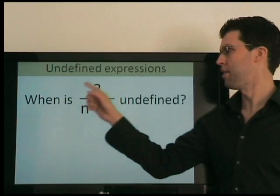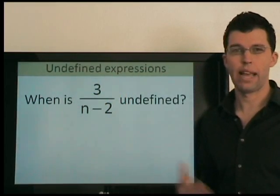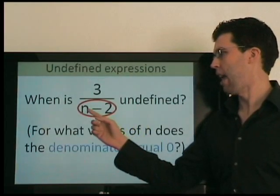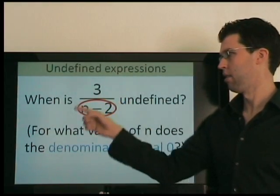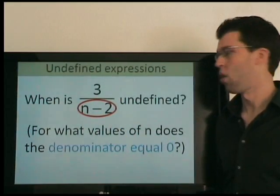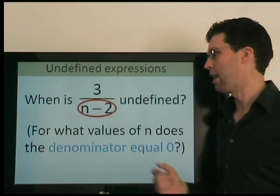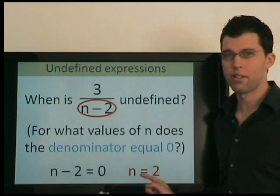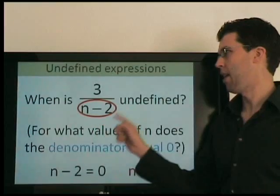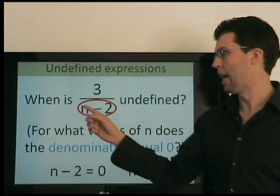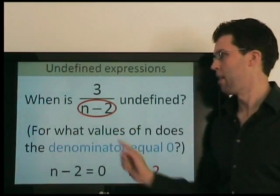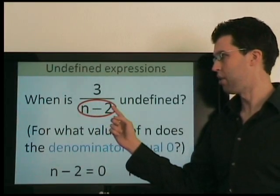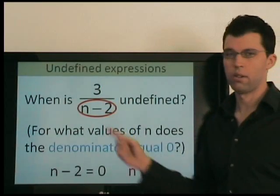We can ask, when does this entire expression have no answer? When is it undefined? And here, it's not that n is 0, it's the entire denominator that's 0. So we set this entire denominator equal to 0, and we solve. So for any other value besides 2, this expression has a value. If I substitute 5 for example, or 6, or any number besides 2, this expression equals a number. But when n is 2, 2 minus 2 is 0, 3 divided by 0 has no value.